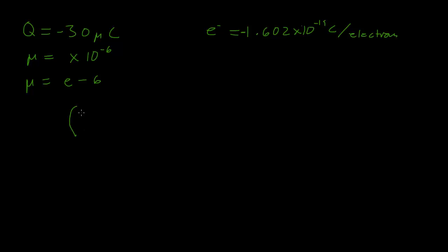So I know what the charge on one electron is, 1.602 times 10 to the negative 19th coulombs per electron. But I need to multiply that by some number x, I'll use x as my variable, to give me a total charge of negative 30 microcoulombs.